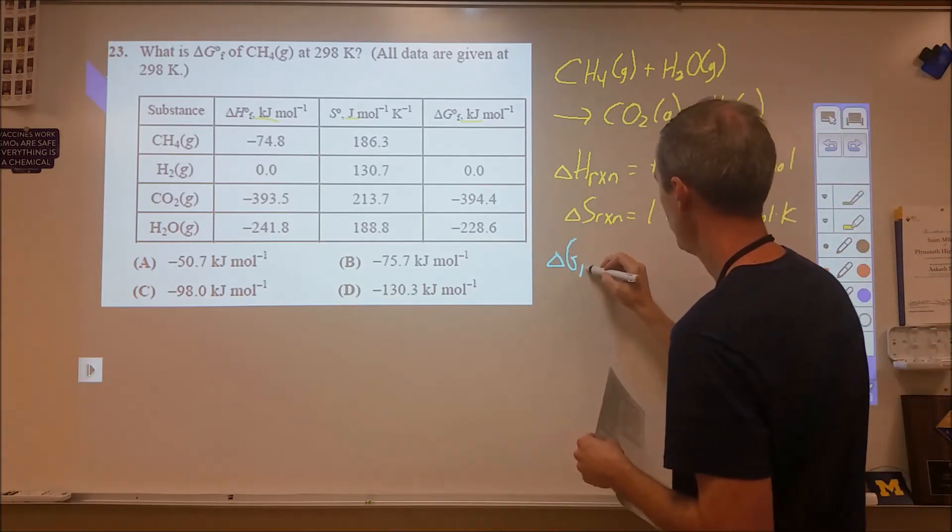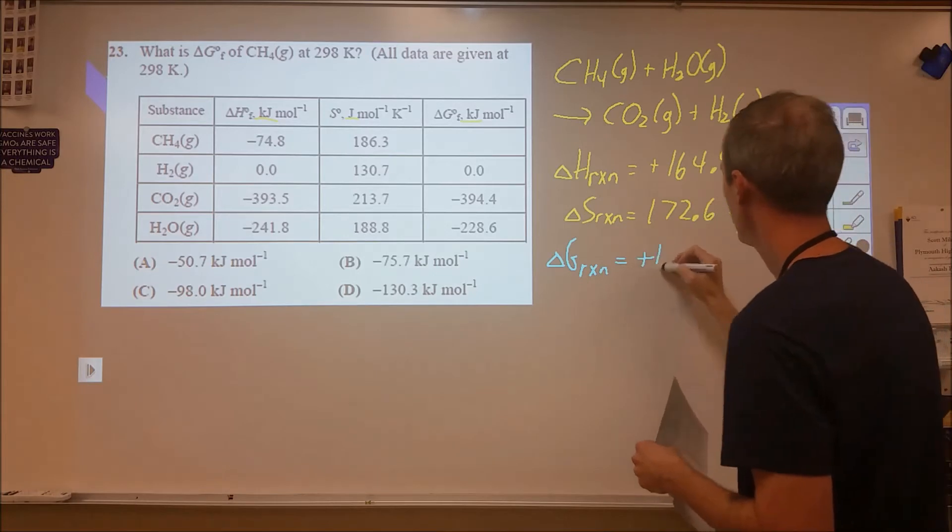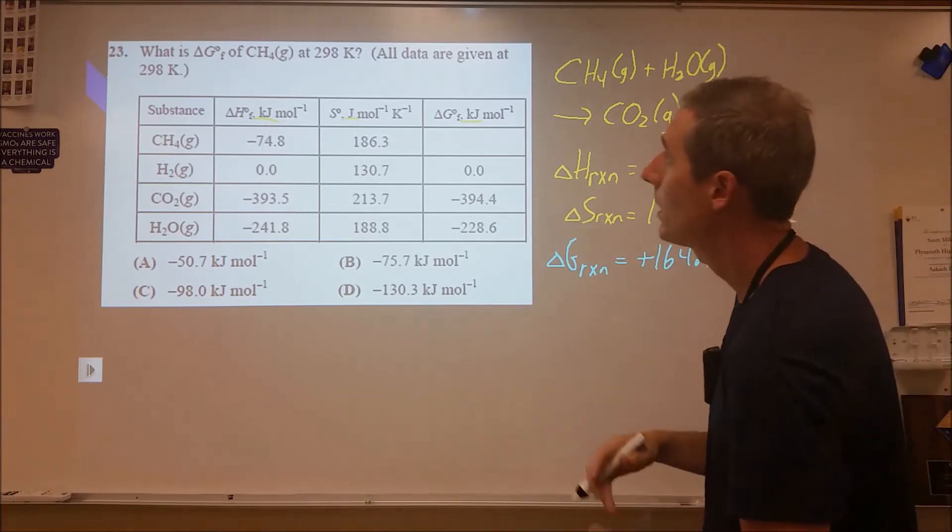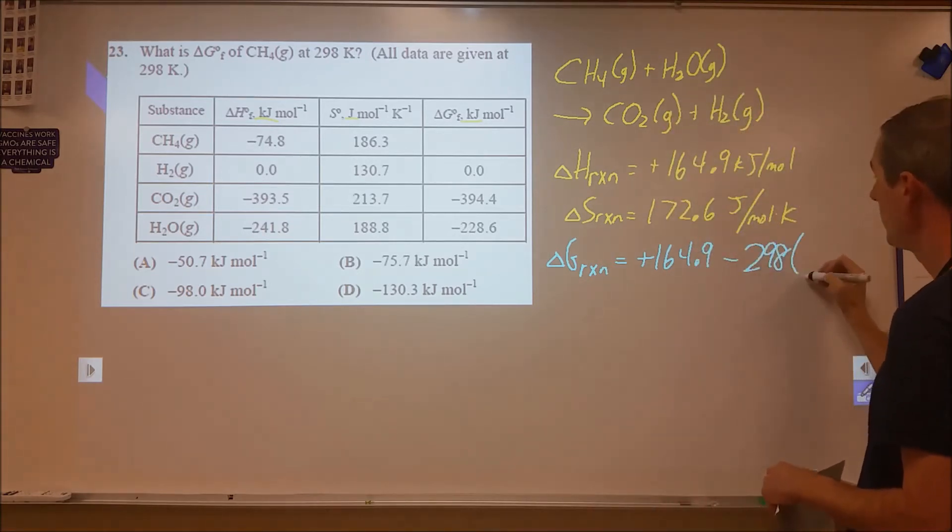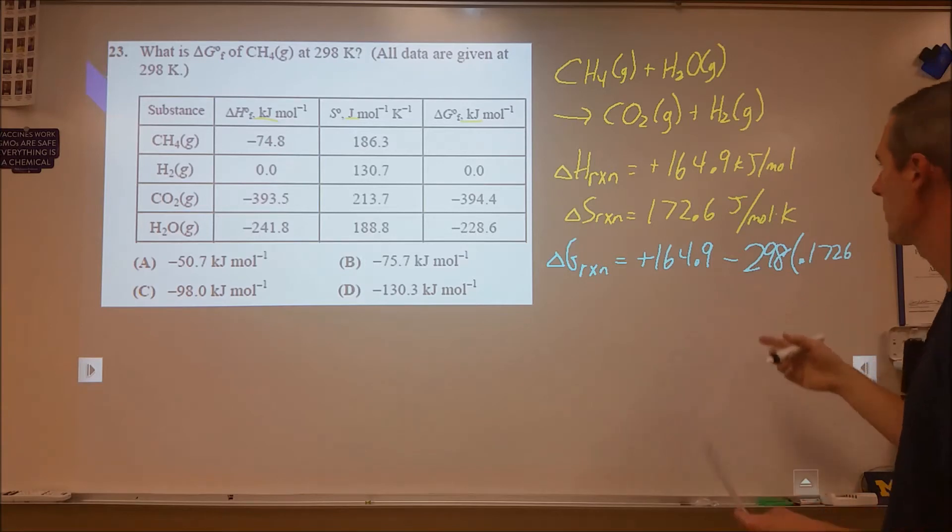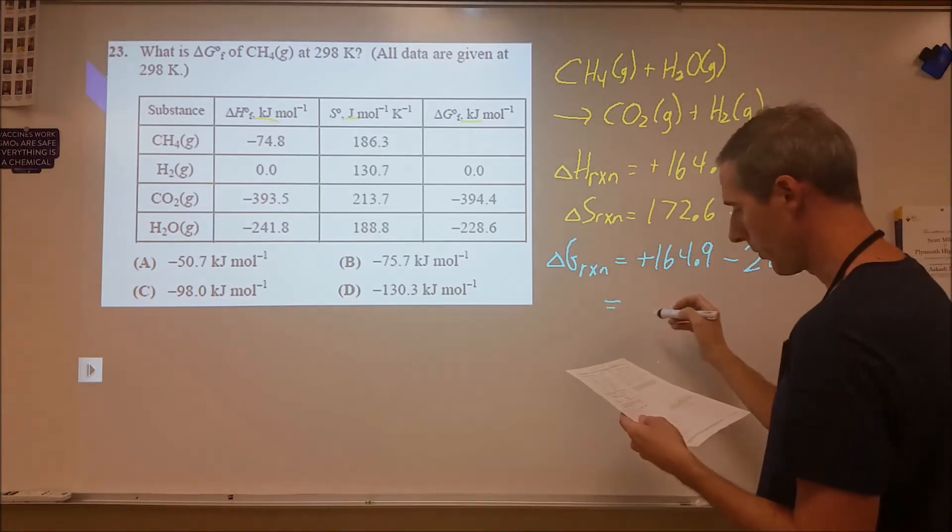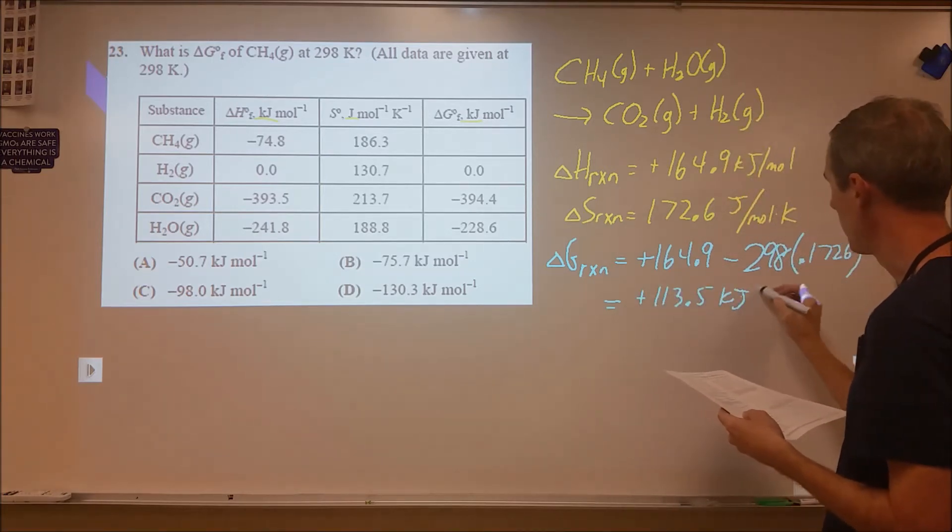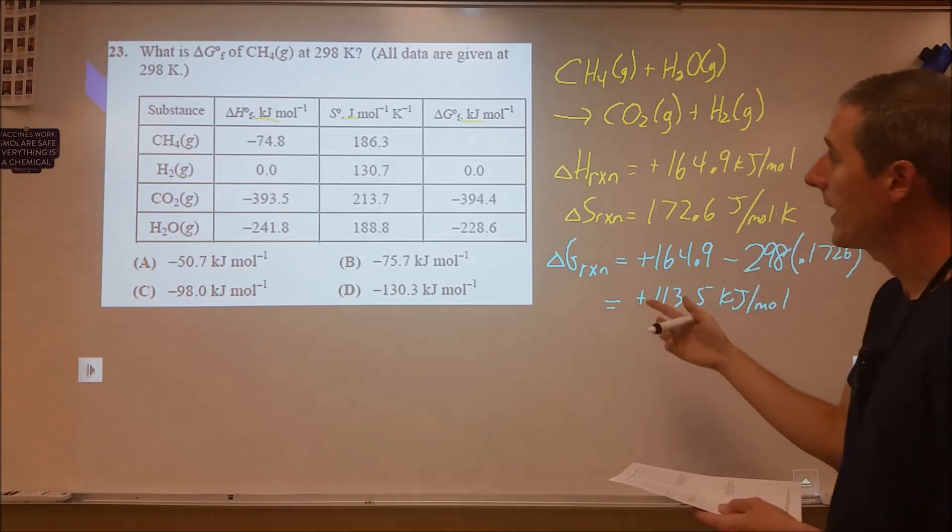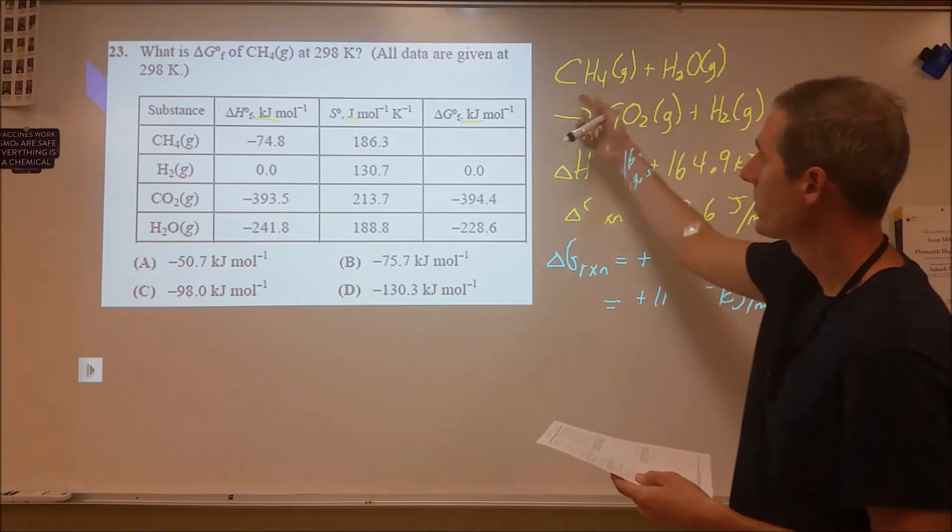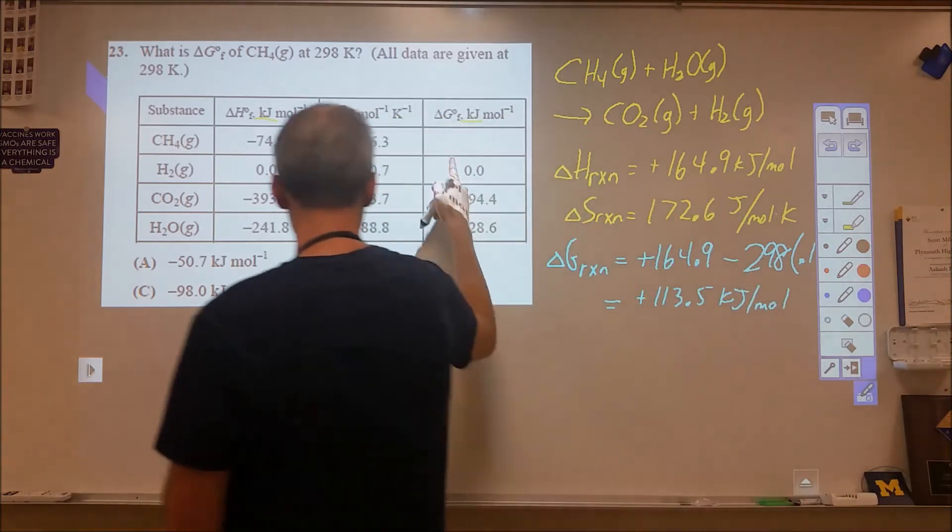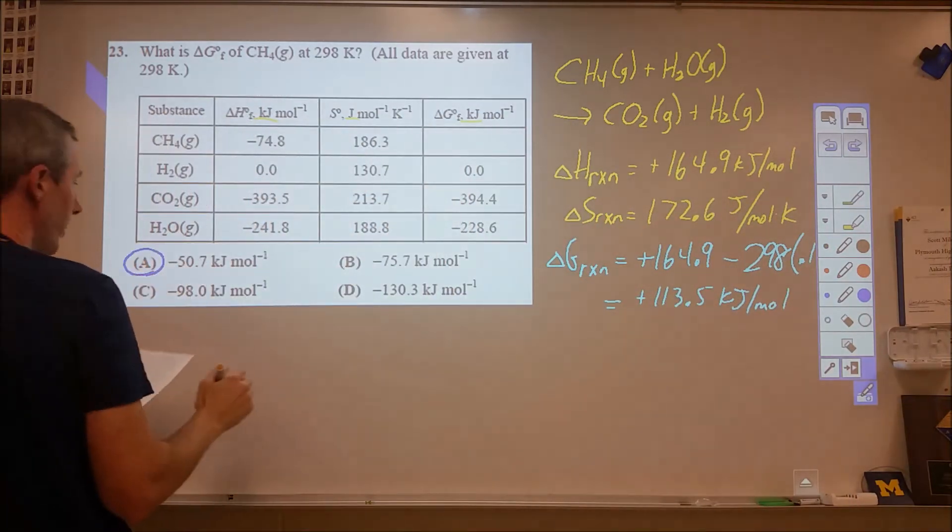Our Gibbs free energy of reaction we can calculate by doing plus 164.9 kilojoules per mole, and then we're going to subtract from that T delta S. So this is standard, so 298 kelvin. We need to multiply that by the entropy, but we need to adjust the unit. So it's 0.1726 in kilojoules instead of joules. When we solve for the Gibbs free energy, that ends up coming up to be plus 113.5 kilojoules per mole. Then we need to say that that's equal to the sum of all the products minus all the reactants. I'm not going to go ahead and do the algebra on that, but it ends up coming up to be the answer is A, negative 50.7 kilojoules per mole.